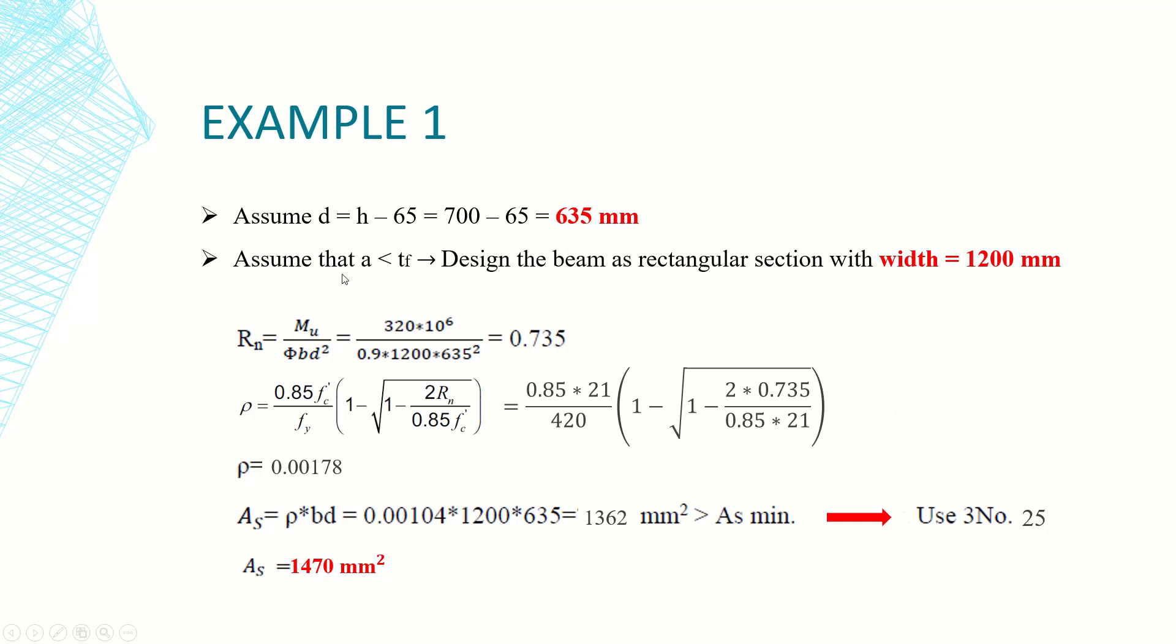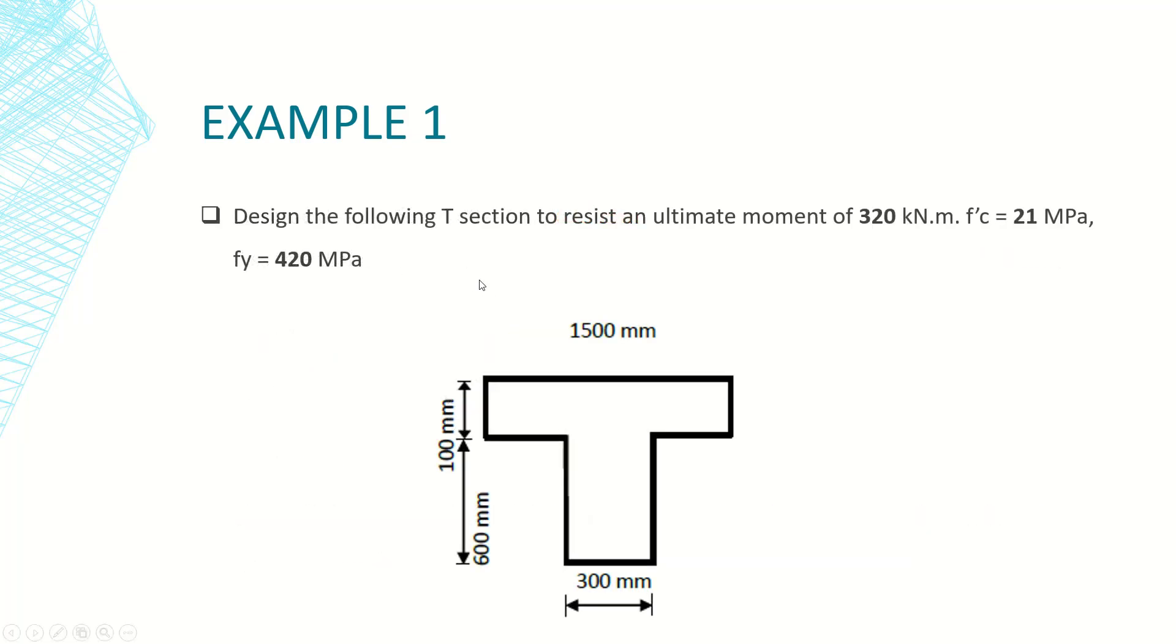The second assumption is that the neutral axis passes through the flange of the beam. When we're assuming that a is less than t flange, or the neutral axis is passing through this flange...